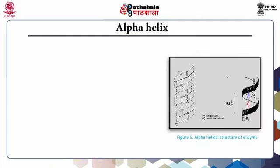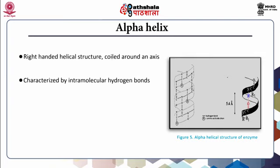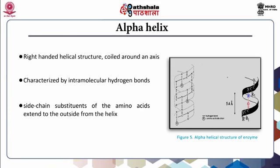The alpha helix is a helical structure coiled around an axis, and the helix is right-handed in nature. The alpha helix is characterized by an intramolecular hydrogen bond between the O atom of the CO group of each peptide bond in the strand and the NH group of the peptide bond. The side chain substituents of the amino acids extend to the outside from the helix. The helix has about 3.6 amino acids per turn on average, meaning it would have 36 amino acids in 10 turns. The pitch is 5.4 angstroms. Alpha helices form more readily in enzymes than any other possible conformation owing to the optimal use of internal hydrogen bonds made in these arrangements for retaining stability.